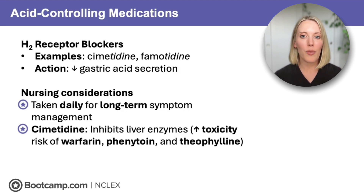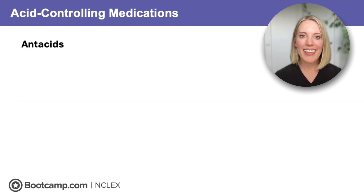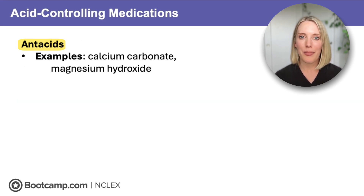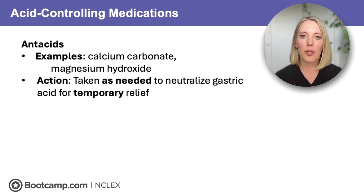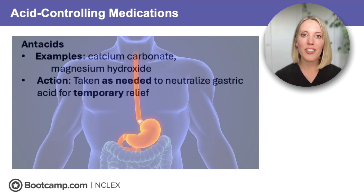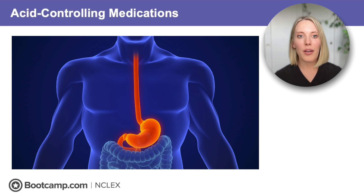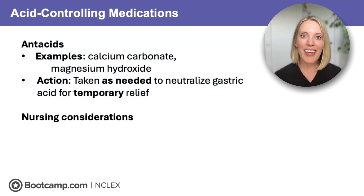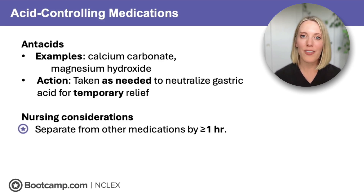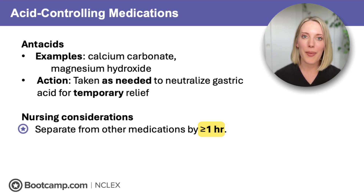Now let's talk about antacids. These are quick relief options and include calcium carbonate (Tums) and magnesium hydroxide (milk of magnesia). These are available over-the-counter and taken as needed, unlike PPIs and H2 receptor blockers, which are taken daily. Antacids don't reduce acid production — they only neutralize it — so they provide quick but temporary relief from symptoms of hyperacidity. If the NCLEX asks about antacids, it will likely ask about administration: antacids must be separated from other medications by at least one hour, because neutralizing gastric acid can interfere with the absorption of other medications like levothyroxine and antibiotics.